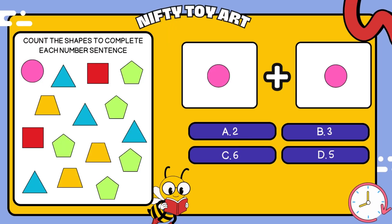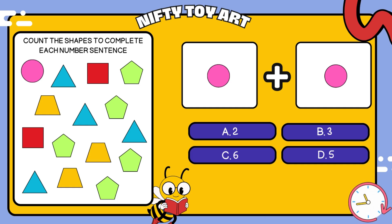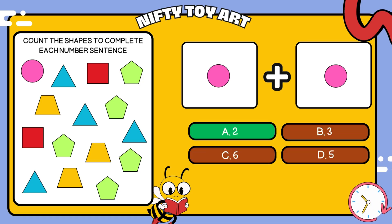I have a circle plus circle. How many all together? That's right, two.